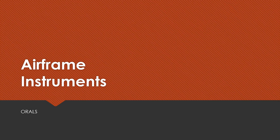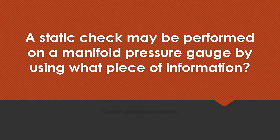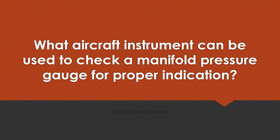Airframe Instruments. A static check may be performed using a manifold pressure gauge by using what piece of information? Current atmospheric pressure. What aircraft instrument can be used to check a manifold pressure gauge for proper indication?